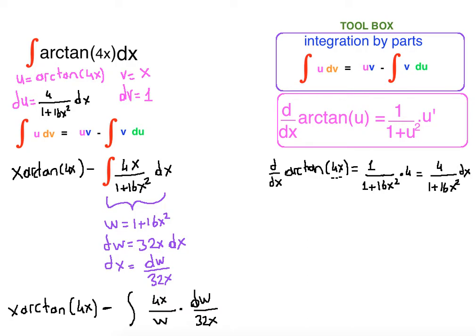Let's do the necessary reductions. For 4x over 32x, it is 1/8 and we can pull it to the front. So what is left? 1 over w is left. Let's rewrite: x arctangent of 4x minus 1/8 integral of 1 over w dw.